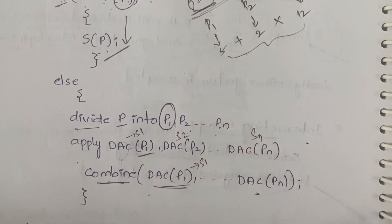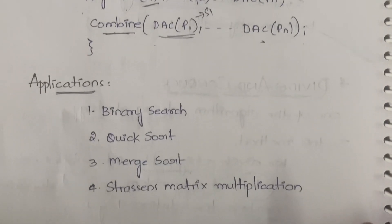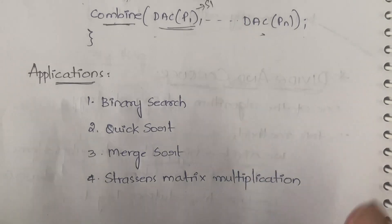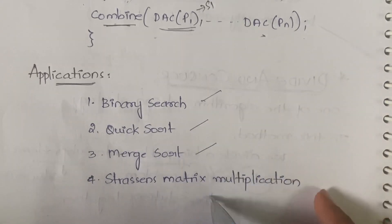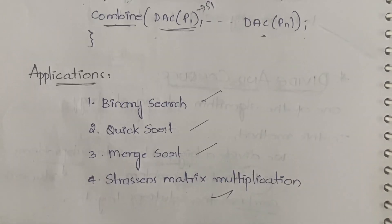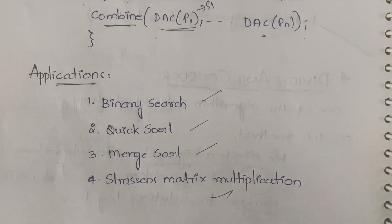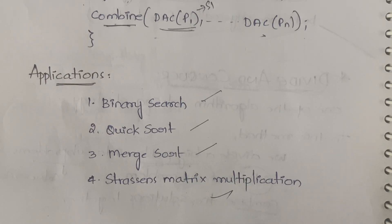Now let us see what are the applications of divide and conquer. We have four applications: binary search, quicksort, merge sort, and Strassen's matrix multiplication. We will be learning about each of them in the next coming videos — the next video will cover binary search, then quicksort, then merge sort.